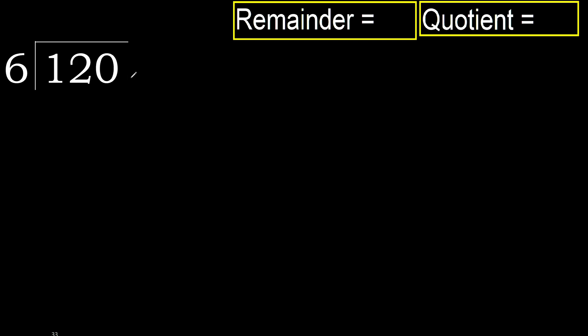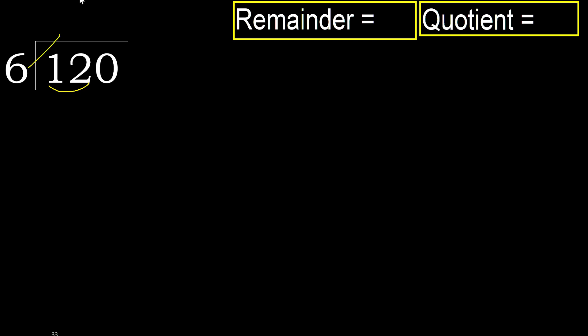120 divided by 6. 1 is less, therefore next. 12 is not less, therefore with 12. 6 multiplied by which number is nearest to 12 but not greater?